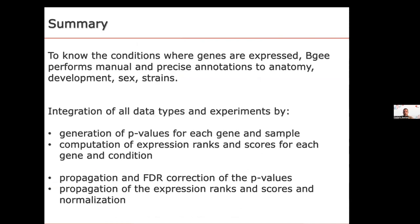In summary, to know where genes are expressed: first, we perform precise manual annotation so all datasets are comparable. Then we generate p-values for each gene and each sample of the significance of expression level. We compute expression ranks and scores for each gene and condition, propagate all this information along the ontology graph, and generate integrated p-values for each gene and condition, giving consistent information at any level of the anatomy. Thank you.